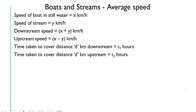In my previous video, I discussed the speed of boat, speed of stream, downstream speed, and upstream speed. We took the speed of boat in still water as x kilometer per hour and speed of stream as y kilometer per hour. When the boat goes along the direction of the stream, we call it downstream, and the downstream speed equals x plus y kilometer per hour. When the boat moves opposite to the stream, it is upstream, and the upstream speed is x minus y kilometer per hour.